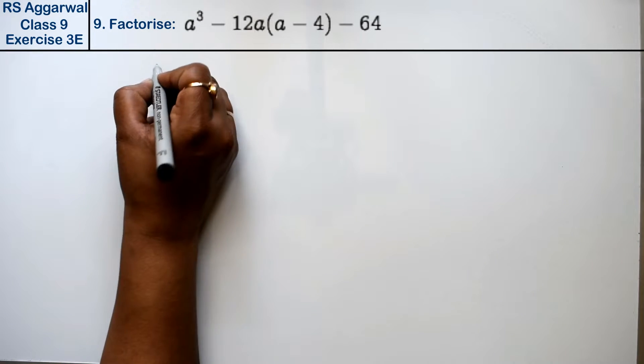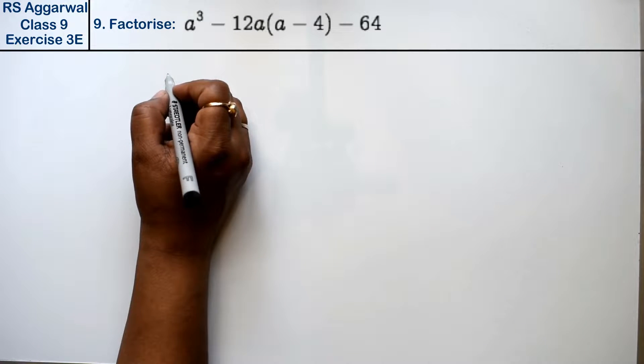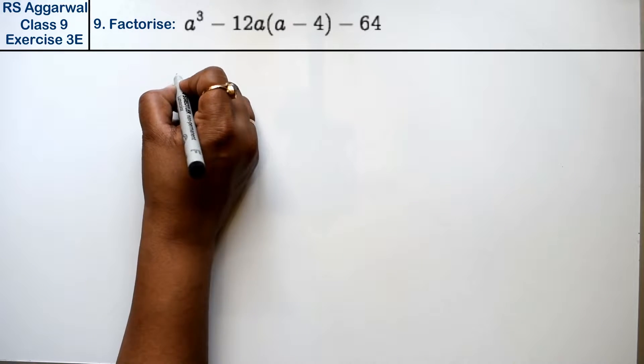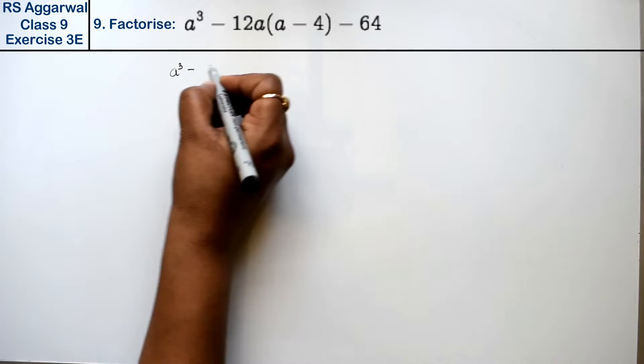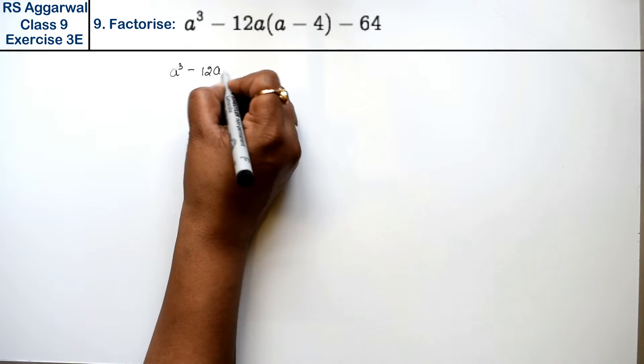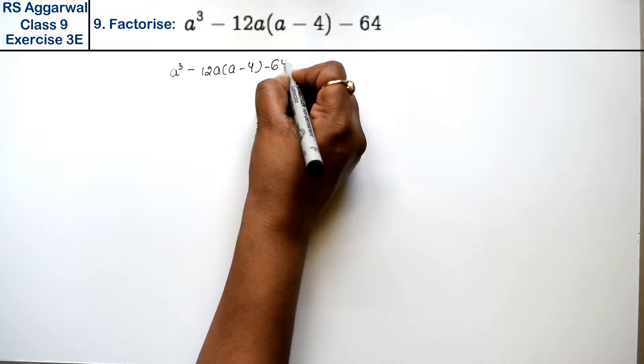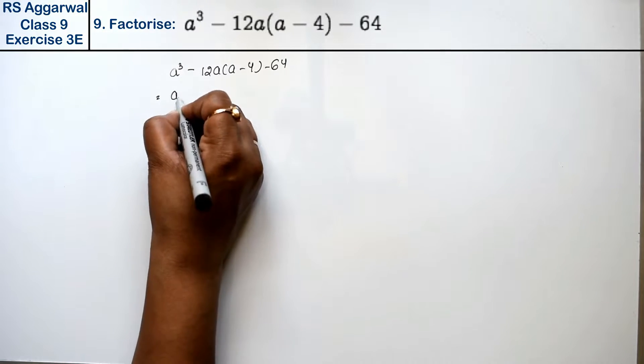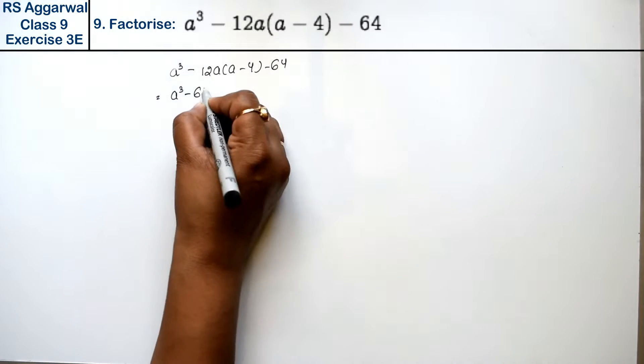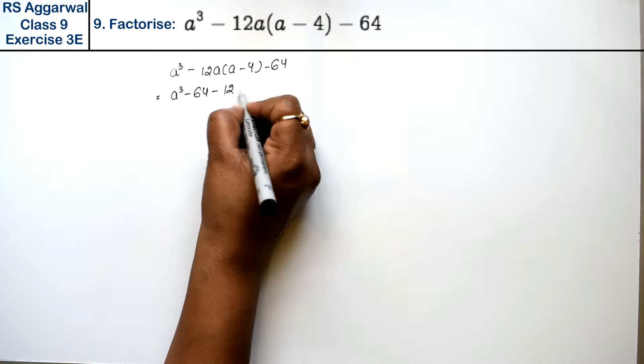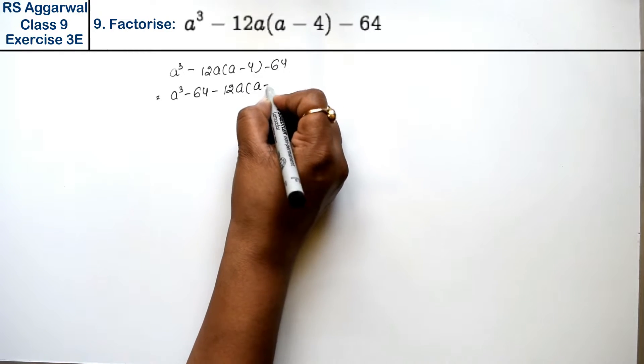Let's do question number 9 of exercise 3E, factorization of polynomials. Question number 9 is a³ - 12a(a - 4) - 64. Friends, we can write this as a³ - 64 - 12a(a - 4).